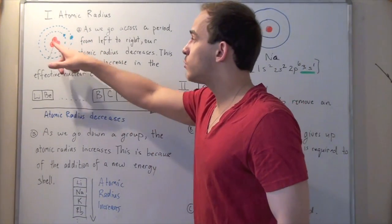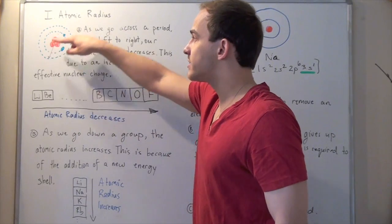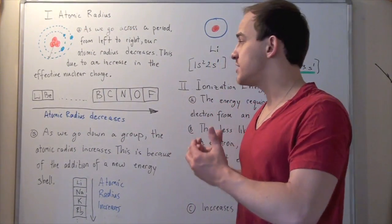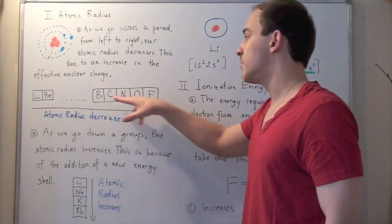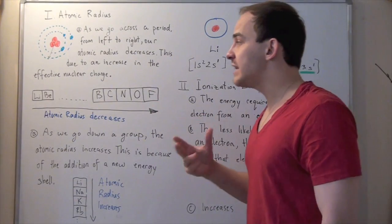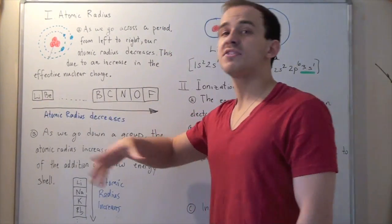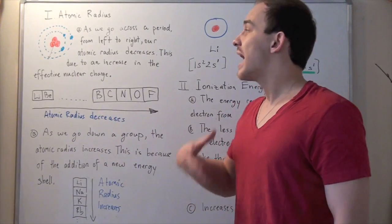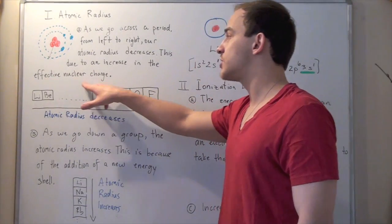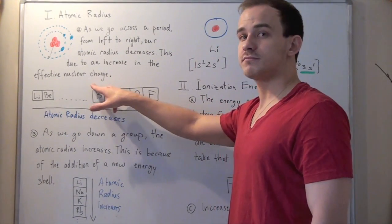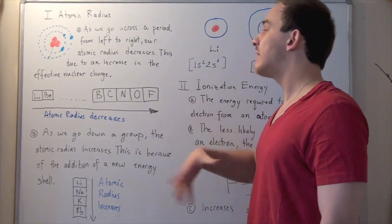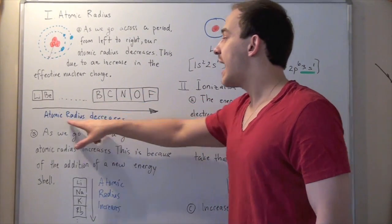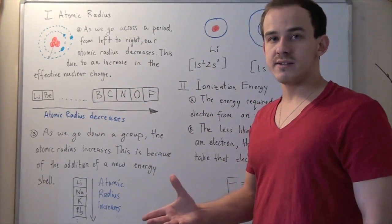The distance between the center — the nucleus — and the outermost electron will decrease as we go across the period. So that means our lithium will have the highest radius, the largest radius, and the smallest effective nuclear charge, while our fluorine will have the highest effective nuclear charge and the smallest atomic radius.